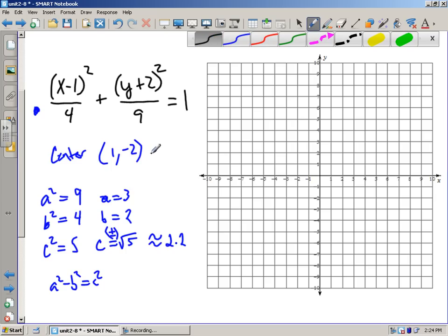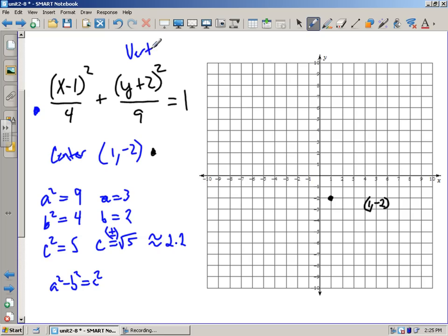So in black I'm going to first plot my center. So my center is at (1, negative 2). There's my center. Next thing I want to do is note, is my ellipse horizontal or vertical? Well let's look at it. a squared is under the y. So it's a vertical ellipse. The ellipse is vertical.